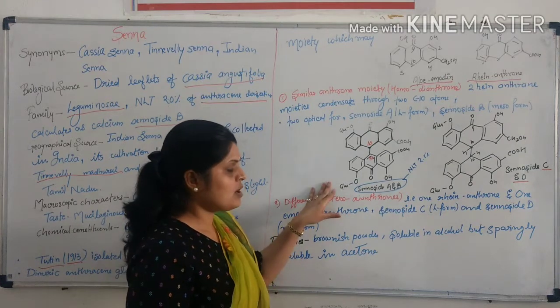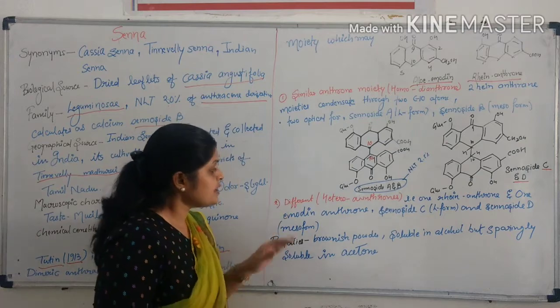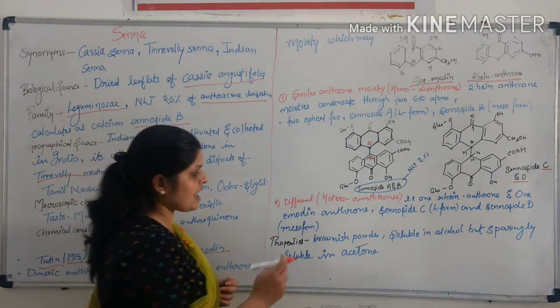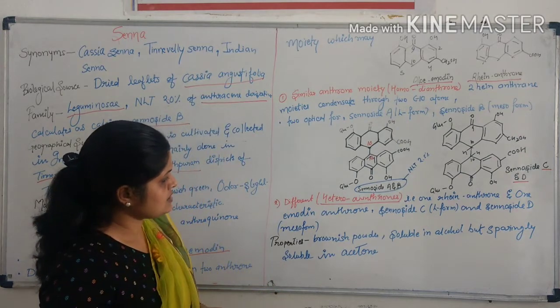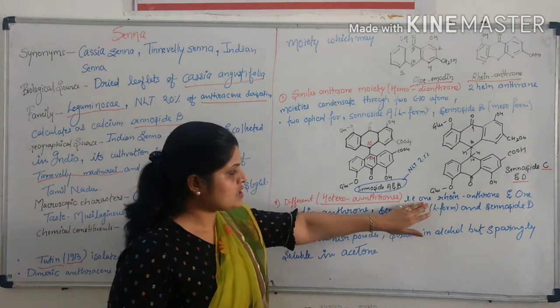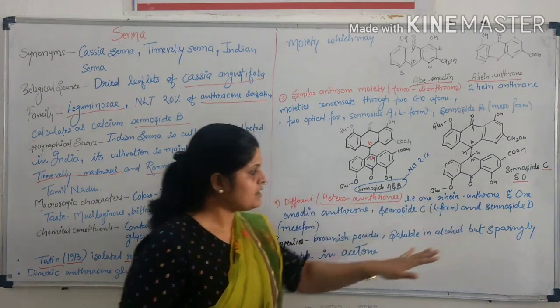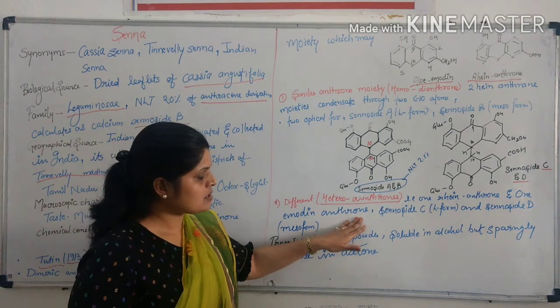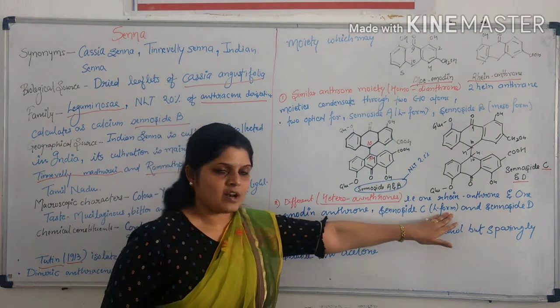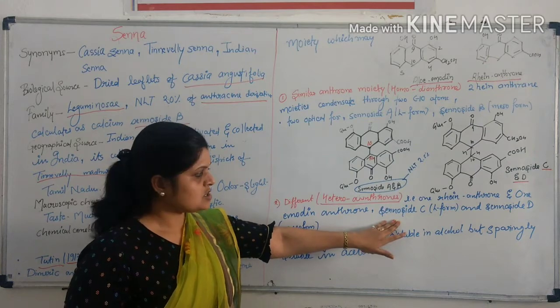While sennoside C and sennoside D exist as synergistic action upon purgative property. Then, different dimer anthroquinone moiety. In each one rheum anthrone and one emodin anthrone. When it is available in alcohol, then it is called sennoside C.